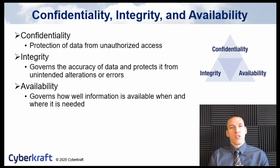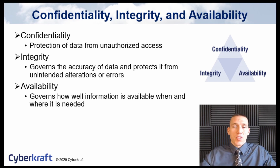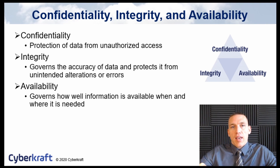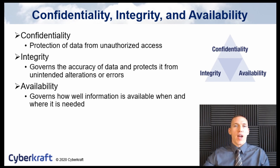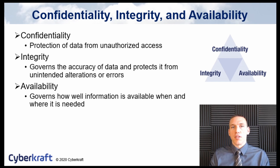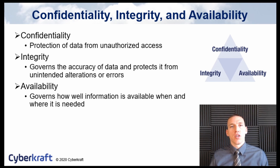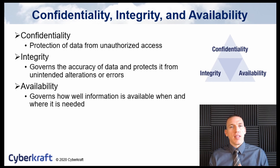When we talk about data in motion, data integrity involves the accuracy of the data transmission and ensures that data is protected from any unauthorized alterations. Availability refers to how information is provided to the cloud customer and whether that information is provided on an uninterrupted basis. Cloud computing is very heavily focused on availability and the ability to provide continuous service, so many of the protection mechanisms covered in this course are based on protecting that availability and providing consistent uptime to the customer.